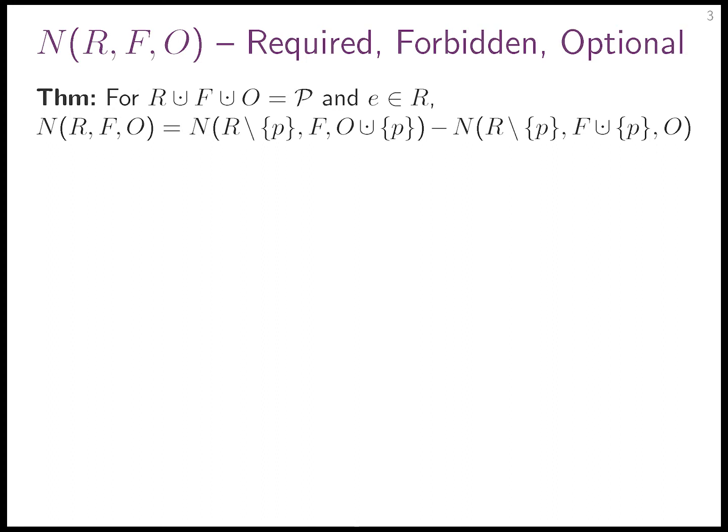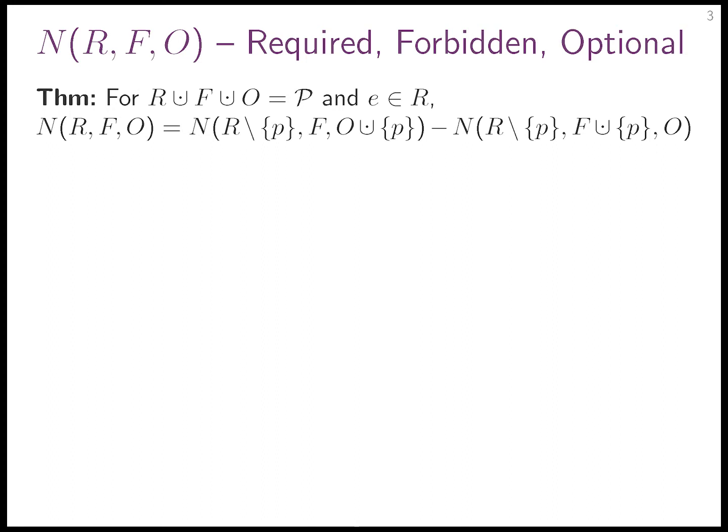This is basically the same thing phrased differently: if I have a term N(R, F, O), I can pull a property out of R, shift it into O, and then subtract what happens if I shift it into F. And as the notation implies, I'm only allowed to do this when R, F, and O don't overlap — they need to partition all of the properties.